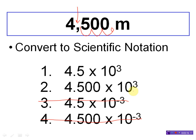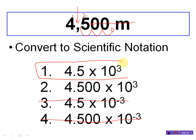Which one of the two remaining answers is the best choice? At this point, it comes down to significant figures. In the original problem, there are no decimal places. If I'm counting sig figs, my arrow goes through the zeros and I count one, two sig figs. Which one of these has two sig figs? It was this one right here — 4.5 times 10 to the third. That is the best answer. Good job, guys, if you got that right.